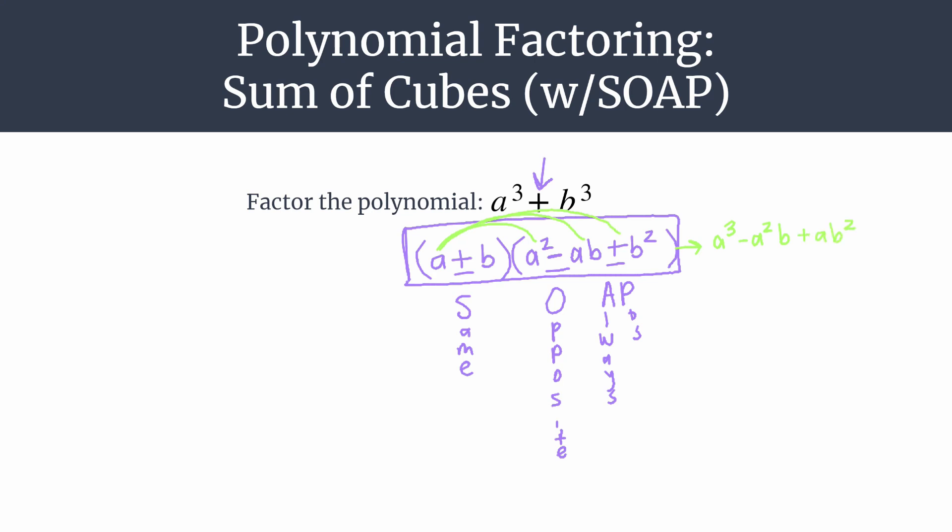All right, moving on to the second term from the binomial, b times a². So that's just plus a²b. B times -ab, so minus ab². And b times b² is plus b³.